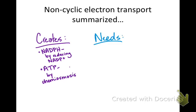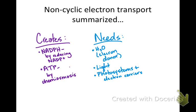Non-cyclic electron transport needs a few things to work: it needs water as the electron donor, so water is split; it needs light to provide photon energy to split the water and excite the electrons; and it needs photosystems and electron carriers to act as a pathway for electrons to move along in slow, very controlled steps, releasing energy in small increments so the plant can capture as much as possible.